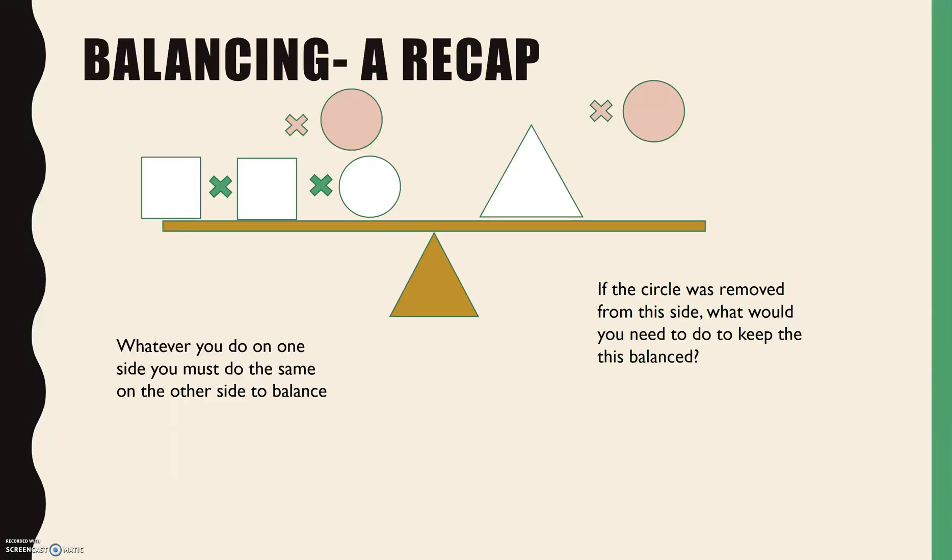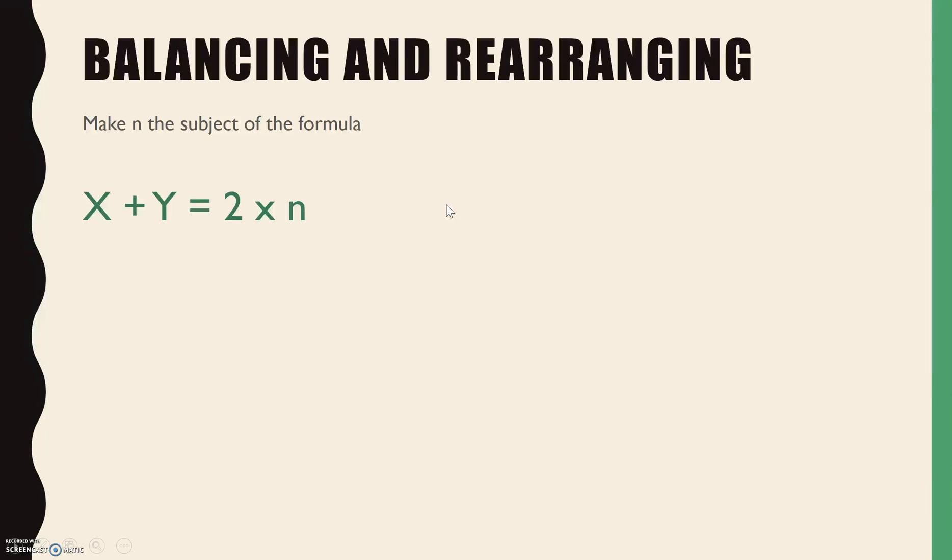Now this idea we've just done with shapes is the same whether it's numbers, letters, or more relevant to science, actual words. So we're now going to apply this idea to rearrange a formula. This is the idea of making something the subject of a formula, so you have to rearrange the formula to put whatever you want to be the subject at the front of the equal sign.